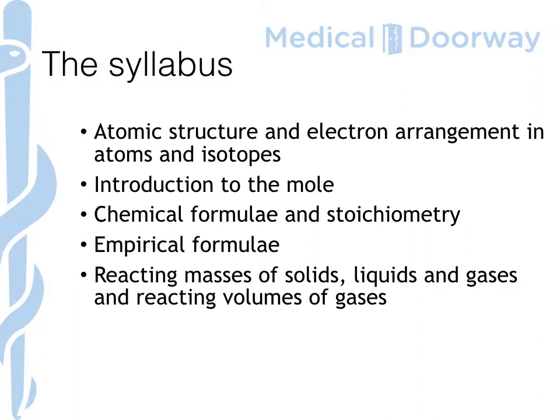The syllabus. We start off with atomic structure and electron arrangement in atoms and isotopes — a pretty standard start for most A-level type courses. Then we look at the mole, chemical formulae and how to make chemical formulae, stoichiometry, and empirical formula. Then we start to get into the calculation side of moles — reacting masses of solids, liquids and gases, and also reacting volumes of gases.